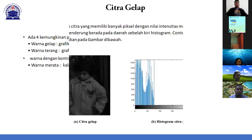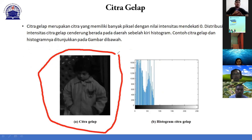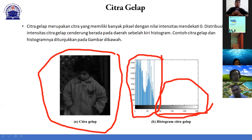Contoh citra gelap: ini contoh gambar default di MATLAB. Citra gelap merupakan citra yang memiliki banyak piksel dengan nilai intensitas mendekati 0, atau mengumpul di sebelah kiri. Yang sebelah kanan kosong, tidak ada. Artinya citra itu gelap. Komputer bisa mendeteksi bahwa kualitas gambar ini buruk karena tidak merata. Manusia bisa langsung tahu gambar gelap, tapi komputer membacanya dari data histogram. Distribusi nilai intensitas citra gelap cenderung berada pada daerah sebelah kiri histogram.